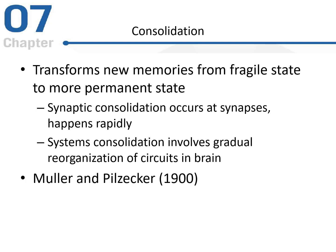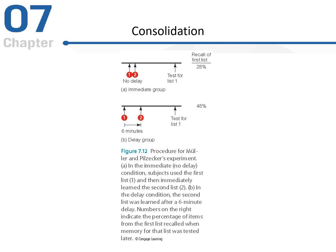We can look at some evidence for this in a 1900 study — a very important and very early study. They had an immediate group and a delay group. Both groups were presented with two lists of words to learn. For the immediate group, both lists were presented back to back with no delay between them. For the delay group, they were given six minutes between list one and list two. After both groups completed the task, they were tested on the list one words. Recall in the delay group for list one was better than in the immediate group. The explanation is that for the immediate group, consolidation of list one was interrupted by immediately presenting list two, whereas the delay group had six minutes to consolidate list one.